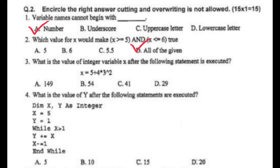What is the value of integer variable y after the following statements are executed? Dim x, y as integer. x = 5, y = 1. Loop while x > 1: y = y + x, x = x - 1. This program will be solved and explained to give you the answer.